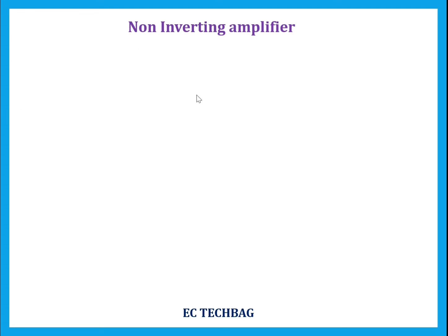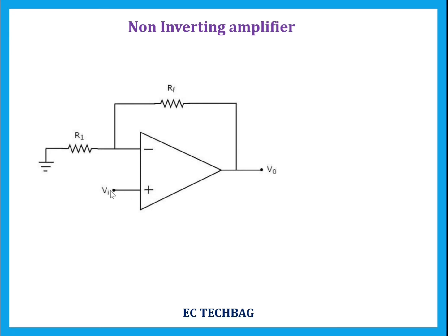It is a non-inverting amplifier, so the input is applied at the non-inverting terminal of the operational amplifier, and the inverting terminal is grounded through resistor R1. It is a negative feedback amplifier, so the output is fed back to the inverting terminal through resistor Rf. R1 is the input resistance connected to the inverting terminal, and Rf is the feedback resistor.